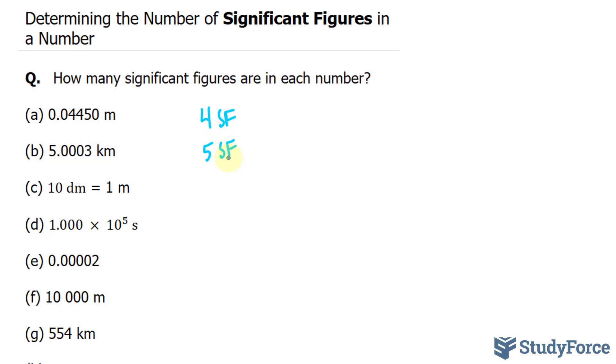In question C, we have 10 decimeters is equal to 1 meter. 10 decimeters and 1 meter are exact numbers as opposed to numbers that are measured. And because they're exact numbers, they have an unlimited amount of significant figures. So whenever you have a defined quantity, it suggests unlimited significant digits. We'll write down unlimited.